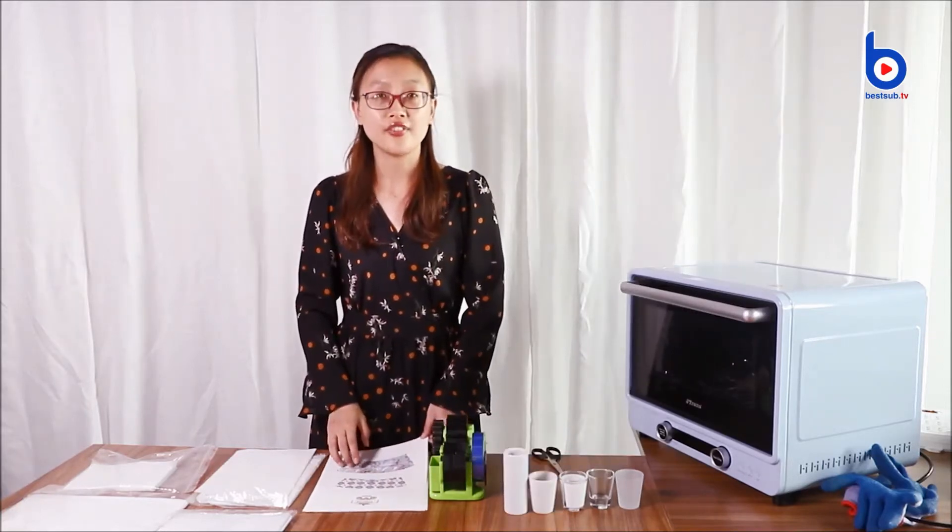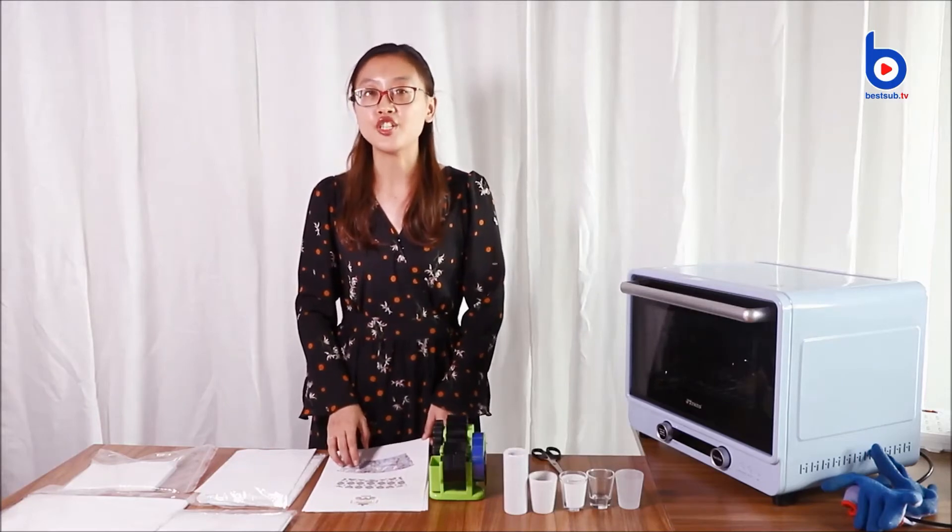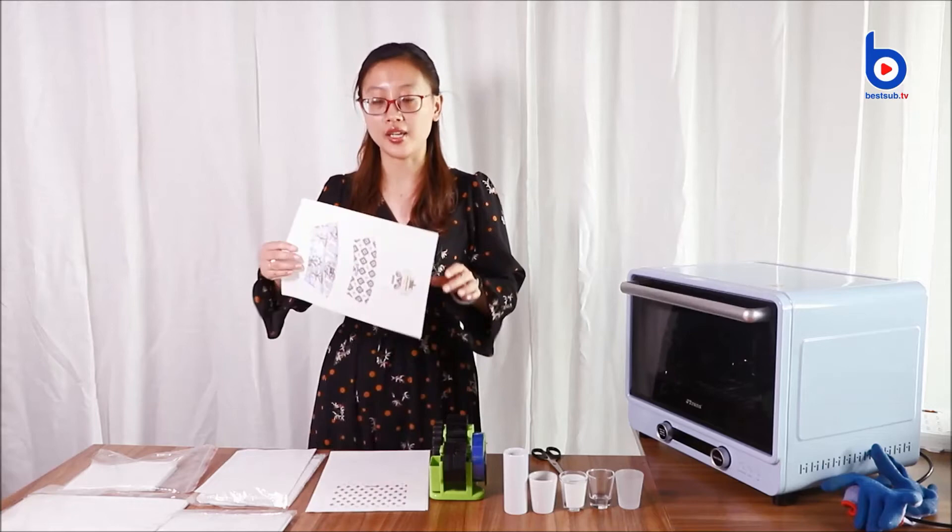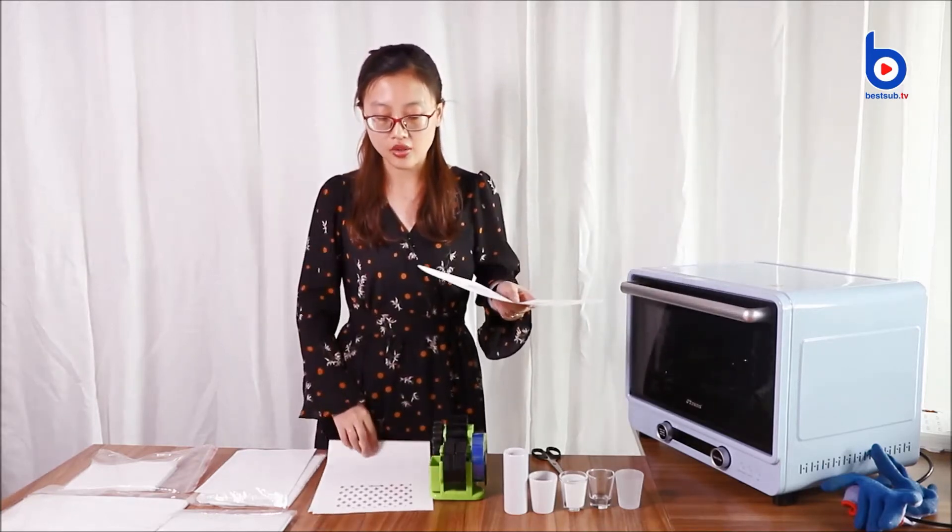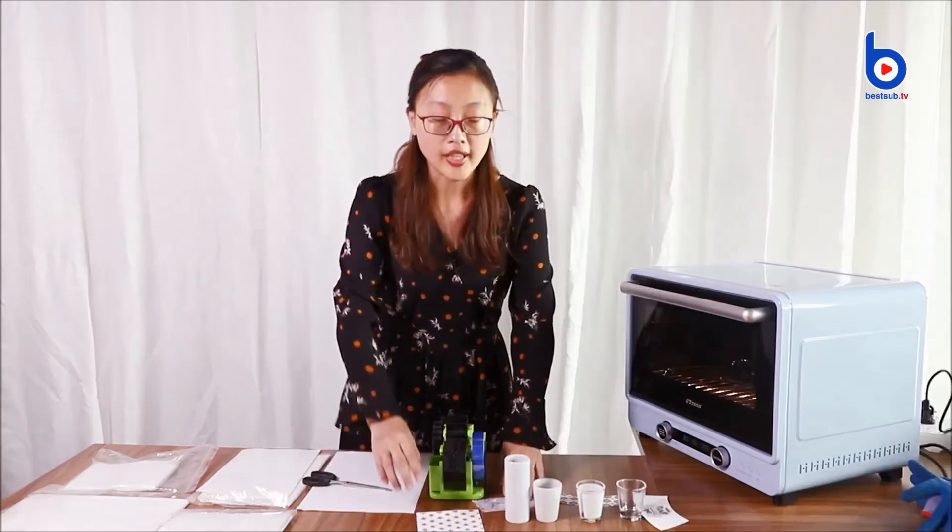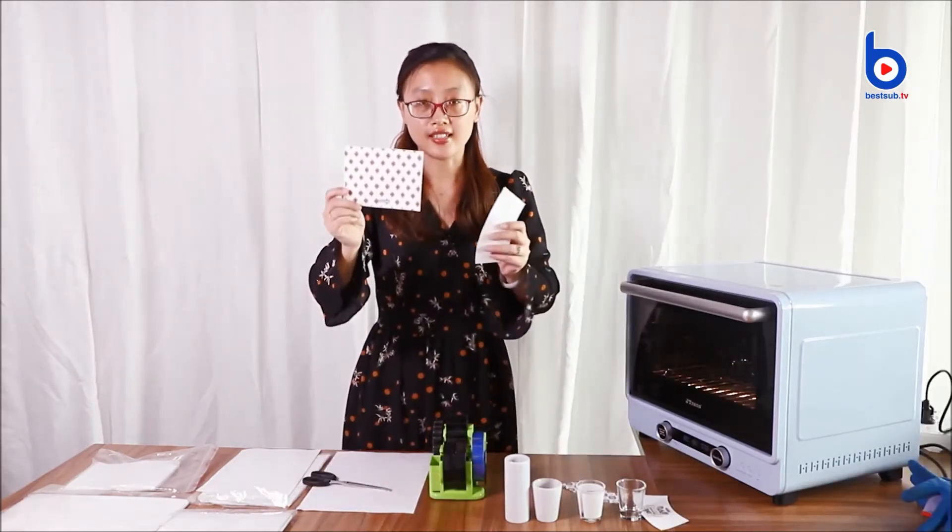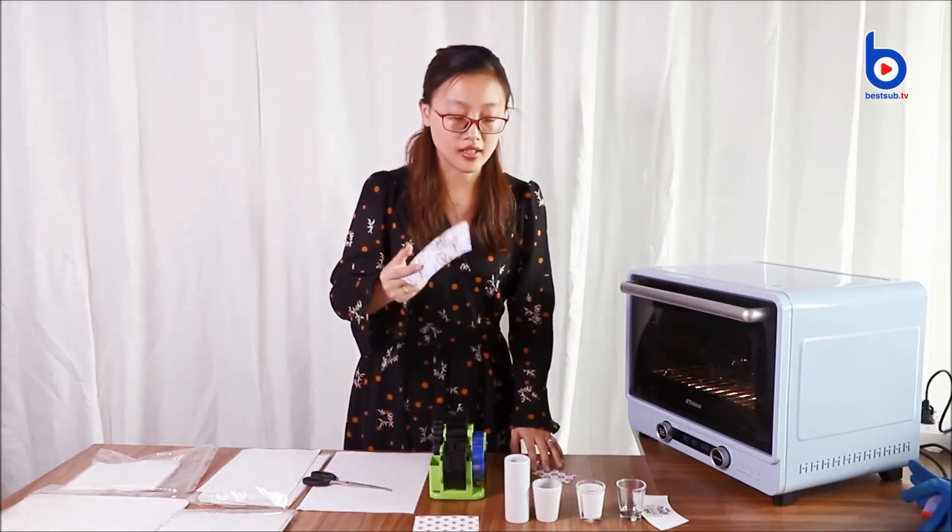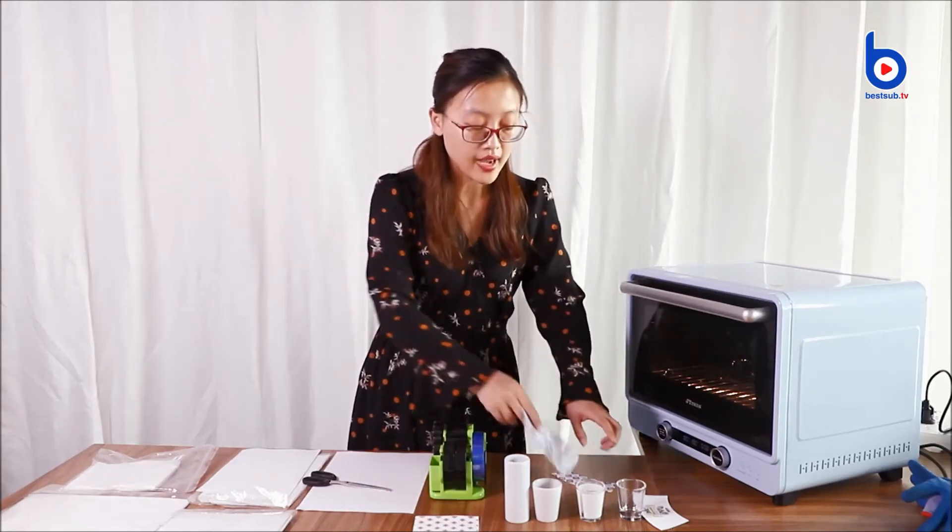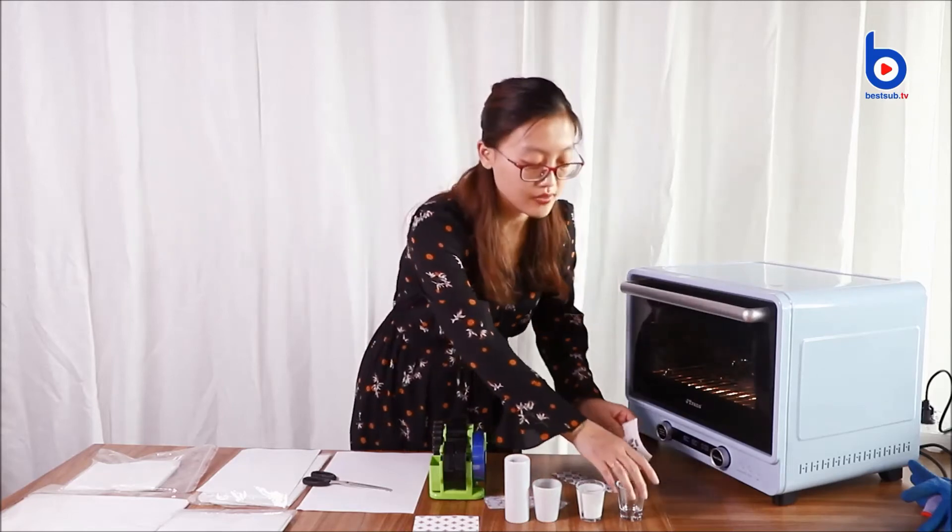The first step must be you need to print your image on the sublimation paper. So here we already have the paper. You can see it here, now we will cut it. We finished cutting the paper and now the second step is we need to stick this paper to the items we would like to transfer.